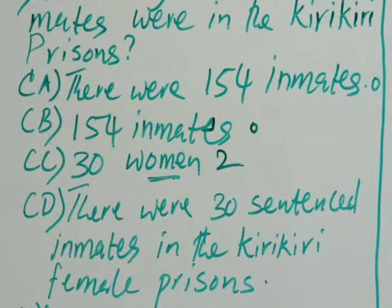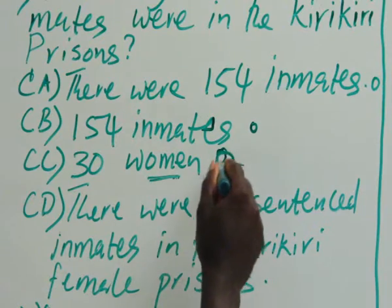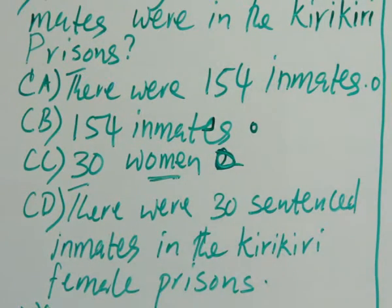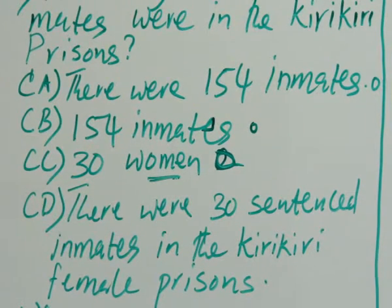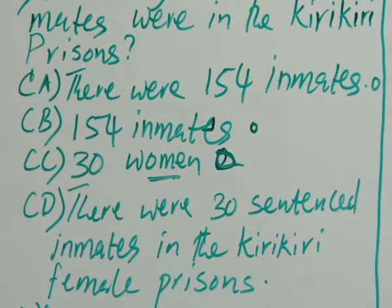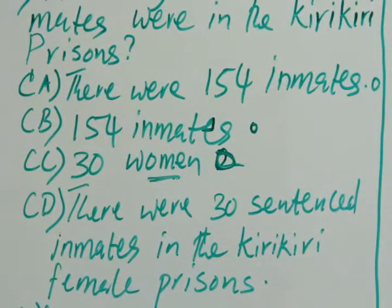Candidate C wrote 30 women, which is correct, but eventually I think this should be wrong. Why should it be wrong? The question asks how many sentenced inmates were in the curriculum of the female prison, not just women. So to say 30 women is deviating. Why use the word women? Why not talk of inmates?